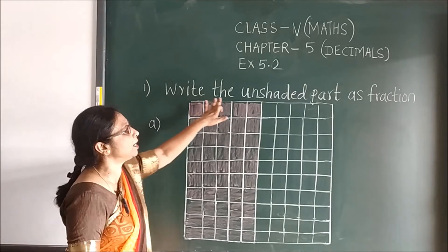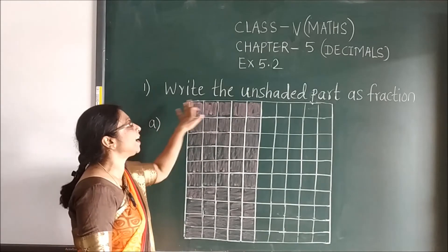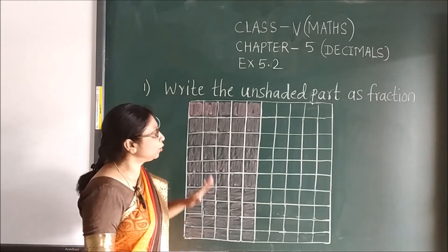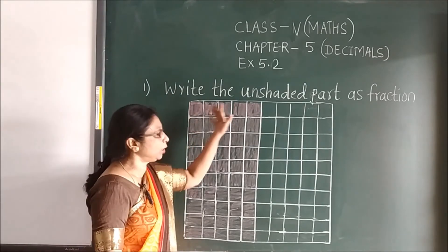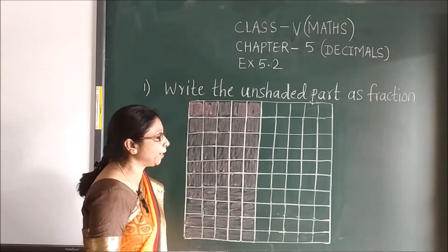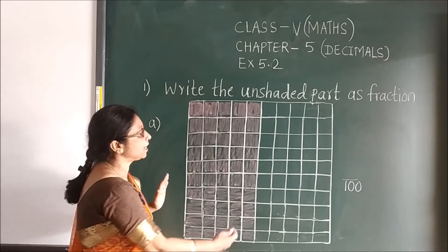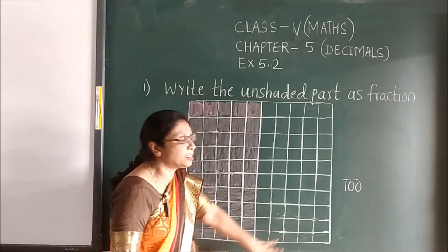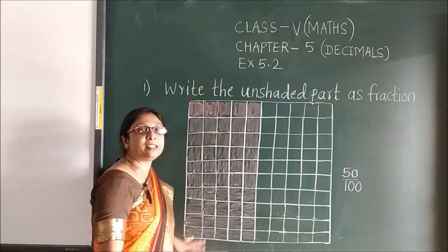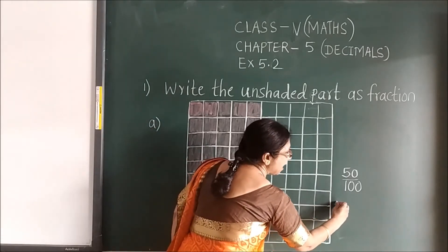Now in exercise 5.2, first question: write the unshaded part as the fraction. You see, to find the unshaded part as a fraction, count the total squares first. Here you can see 10 on this side and 10 on this side, so 10 times 10 is 100. You will write 100 in the denominator. Now the unshaded: 5 parts are shaded and 5 parts remain unshaded — that means 50 parts are shaded and 50 are unshaded. Clear?